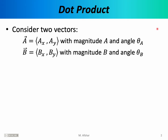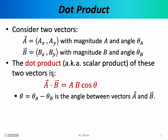To define the dot product, first consider two vectors. Imagine you have two vectors, A and B. A has components AX and AY, whereas B has components BX and BY. Given the Cartesian components, you can calculate the magnitude and the orientation of each vector. Vector A has a magnitude A and an angle theta sub A, while B has magnitude B and angle theta sub B. The dot product of these two vectors is also known as the scalar product, and it is defined by this equation.